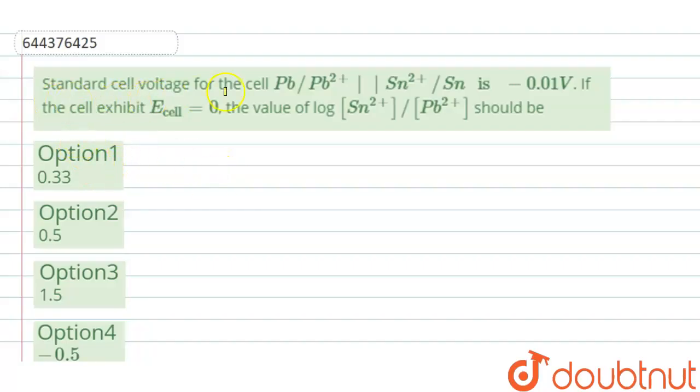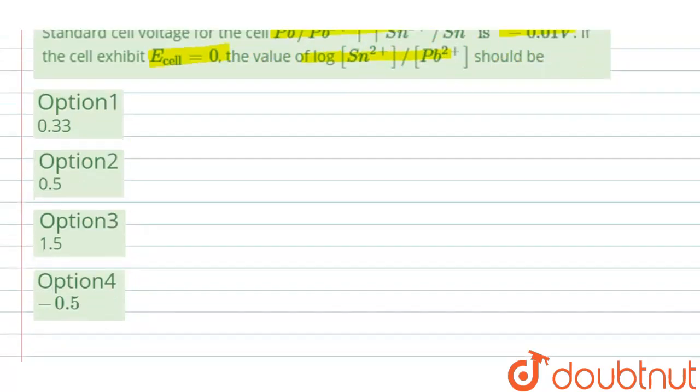The question is: the standard cell voltage for the cell is given as minus 0.01 volts. If the cell exhibits E cell equals 0, the value of log [Sn2+]/[Pb2+] should be, and these are the options.